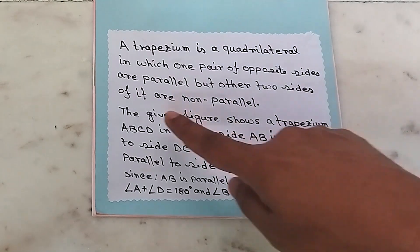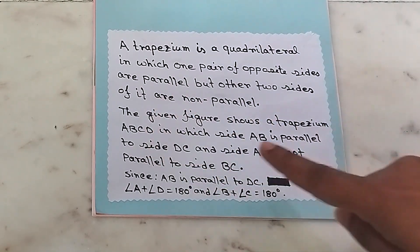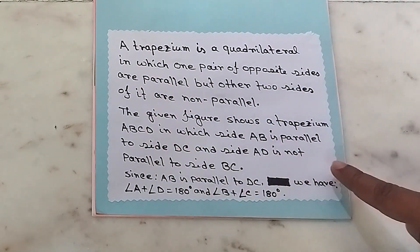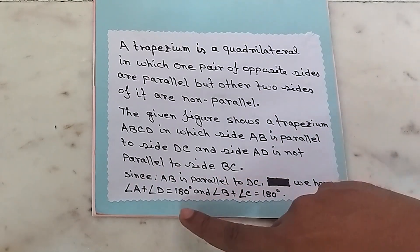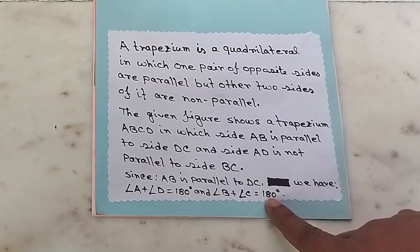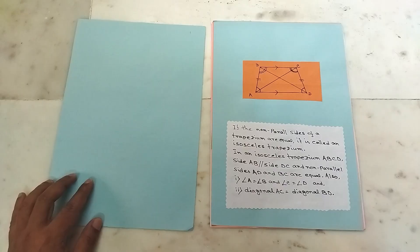It's a math project and it's on types of quadrilaterals. Quadrilaterals and types of quadrilaterals. Quad means four and lateral means sides. All closed figures with four sides are called quadrilaterals.